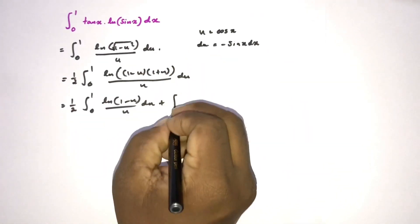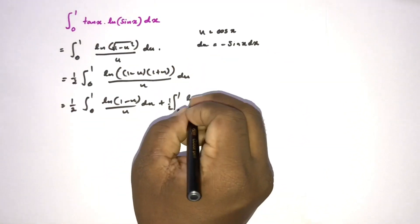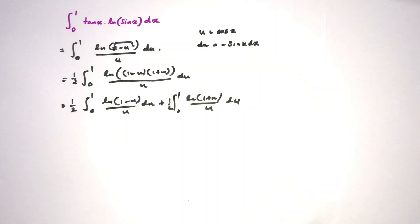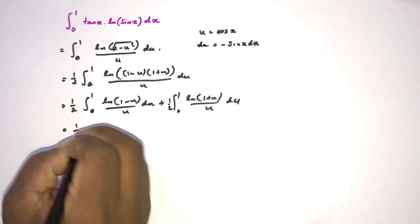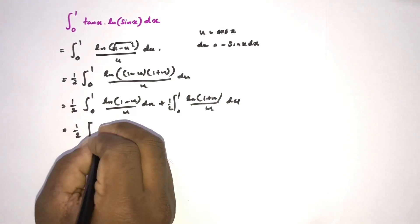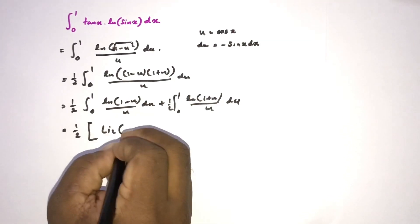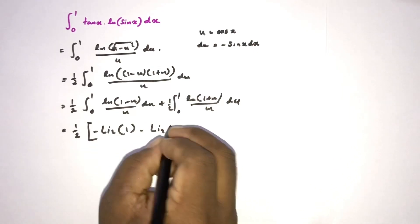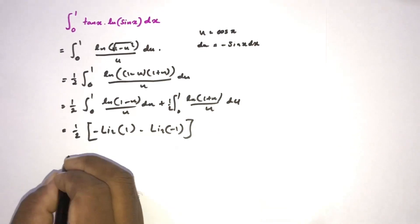We know this is equal to the dilogarithm of, dilogarithm of one minus, dilogarithm of one minus, dilogarithm of minus one. And this is equal to one half minus π squared over twelve plus π squared over twelve, here six.